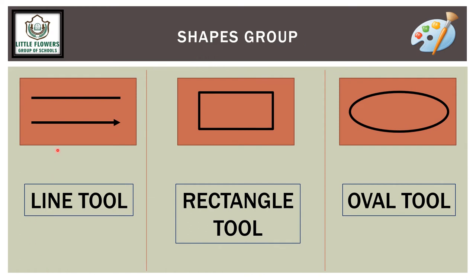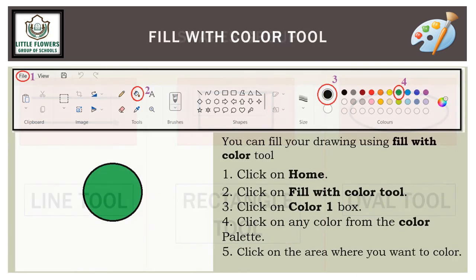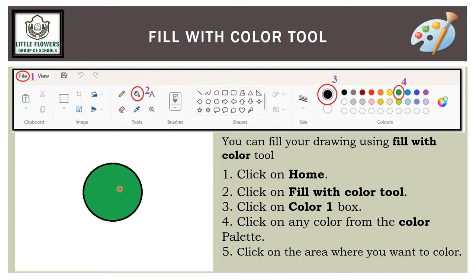The line group includes a line shape, rectangle tool, and oval tool. To fill color: go to the Home tab and click on Fill With Color. Select a color from the color palette by clicking on a color box, then click on the area where you want to fill the color. For example, select a circle, choose Fill Color, pick any color, and fill it in.